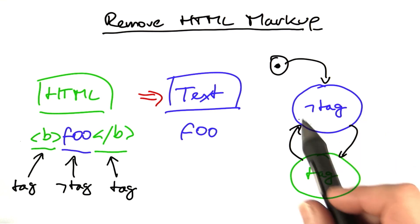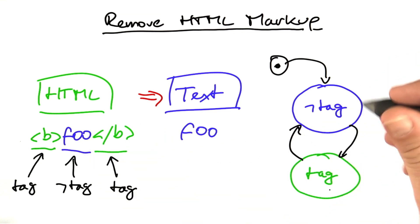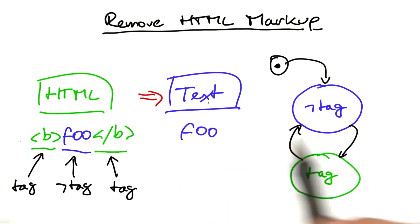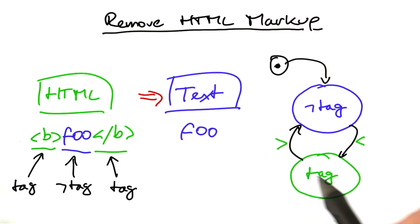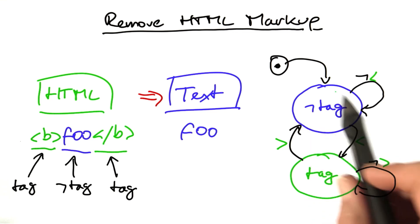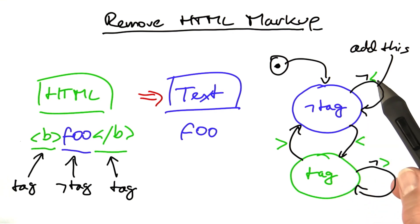We can describe the behavior of our function as a finite state machine with two states: non-tag mode, that is, processing text, and tag mode, that is, ignoring HTML markup. When we see a less than sign, we go into tag mode. When we see a greater than sign, we exit tag mode. For all other inputs, we stay in the same states. When we are in non-tag mode and see any character that's not the beginning of an HTML markup, we add this character to the output. Whereas in tag mode, we simply ignore the HTML markup that we process.